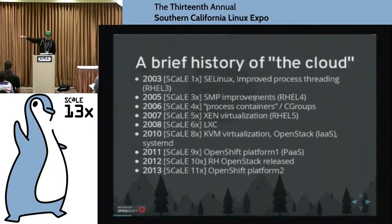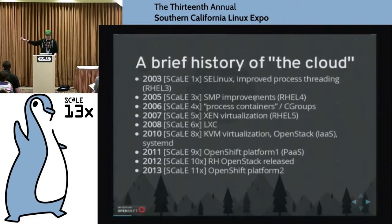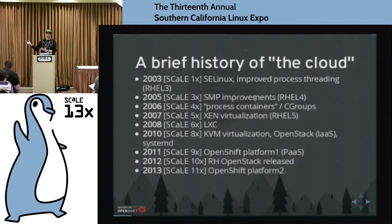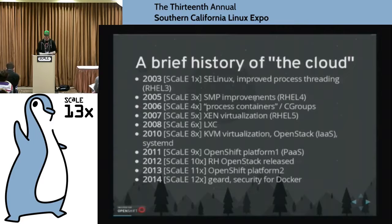Docker is based on LXC, but by now people know that containers are a bigger thing than just LXC. We're really combining Docker built on LXC and adding SELinux to lock down that container. Red Hat OpenStack was officially released in 2012 around SCALE 10X. OpenShift first released in 2011. You guys all know the term platform as a service — this is basically what we're trying to do: a great developer interface that allows you to horizontally scale your applications across an array of boxes.